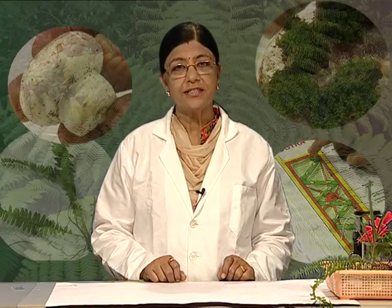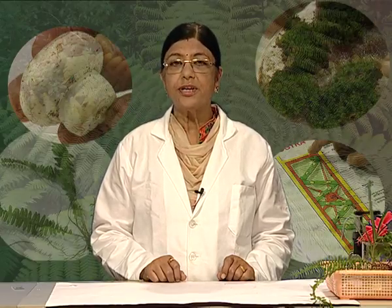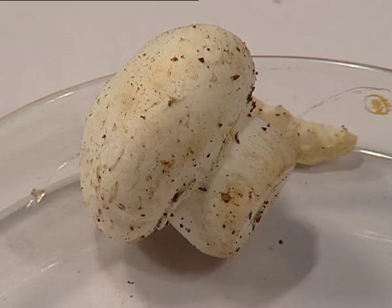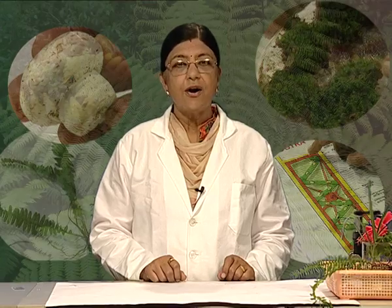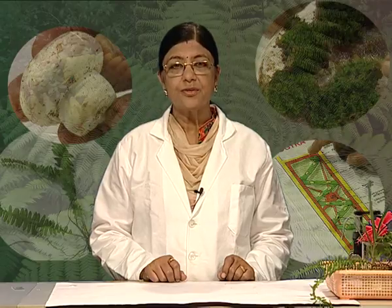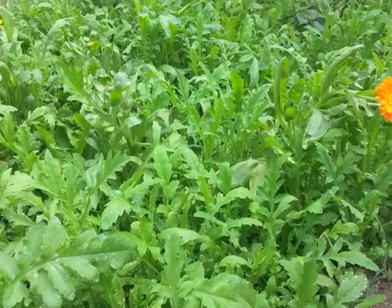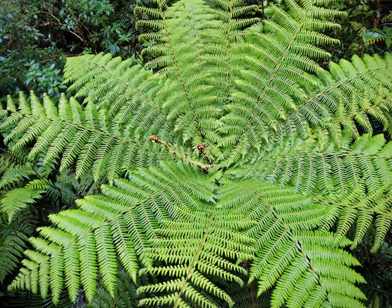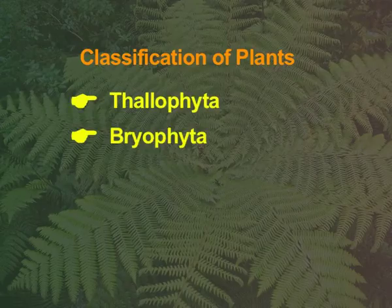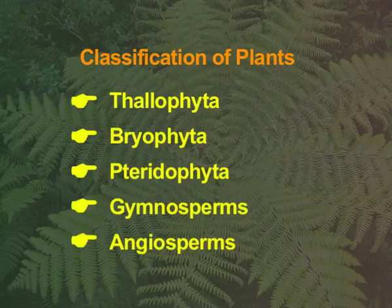Heterotrophs are those organisms which cannot prepare their food by themselves. Fungi belongs to this category. Autotrophs are those organisms which can prepare their food by photosynthesis. Green plants, all of them belong to this category. Depending on the size of the plant and complexity of the plant body as well as the reproductive organs, plants have been divided into five other groups: Thallophyta, Bryophyta, Pteridophyta, Gymnosperms and Angiosperms.